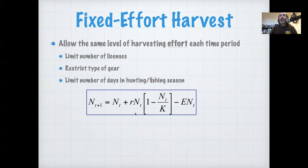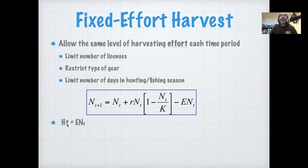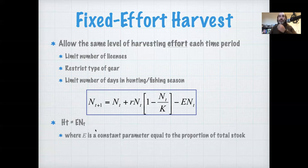Here we've modified our logistic growth model to include this idea of fixed effort. The population at the next time point is the population right now, plus the growth component determined by the growth rate and the carrying capacity, and then we have this harvest component represented by minus E times N_T — N_T being the population right now, E being some measure of effort. So our harvest at time T is our effort times our population at time T. We're essentially defining E as the proportion of the stock that's able to be harvested per unit time.